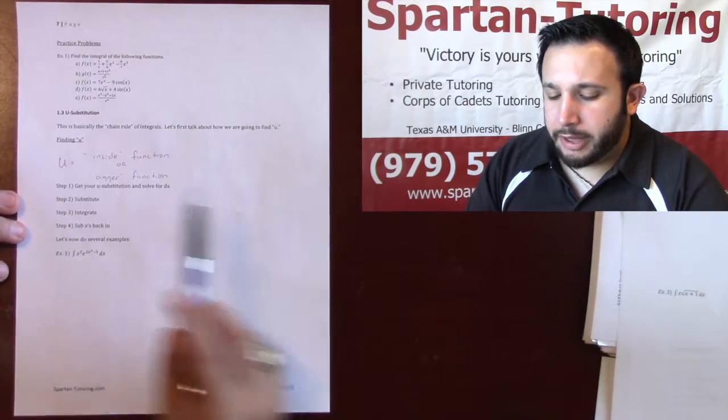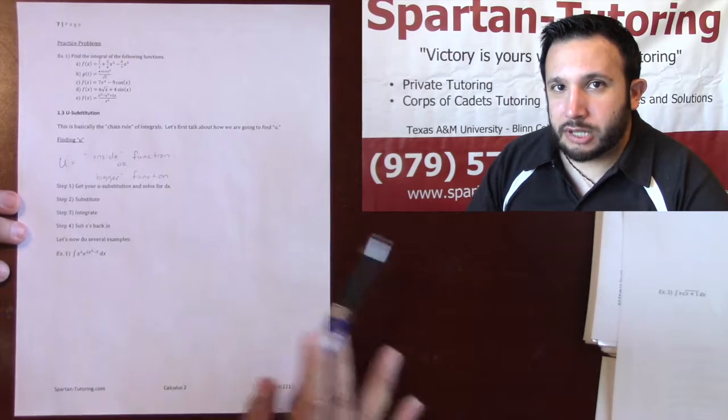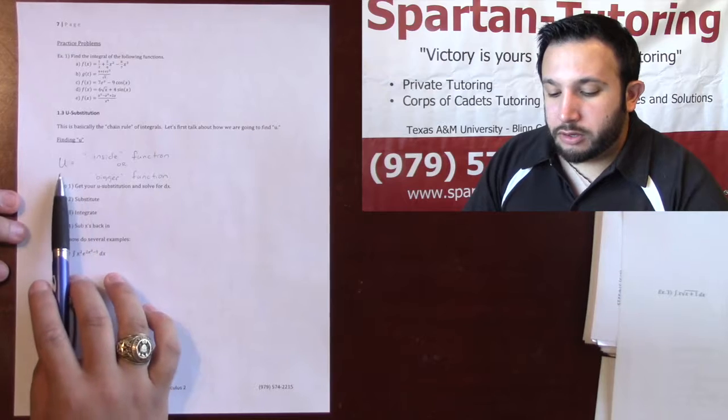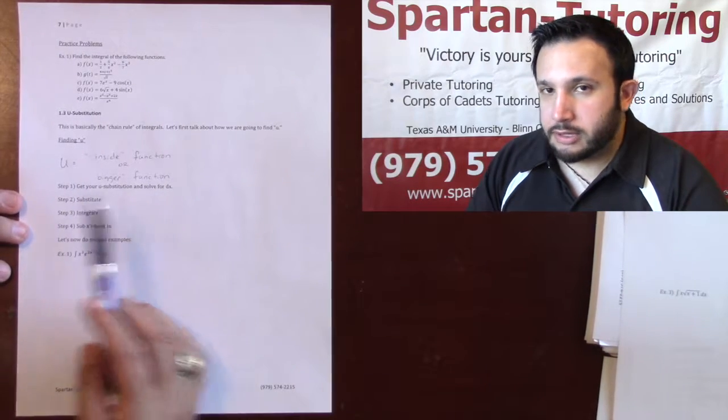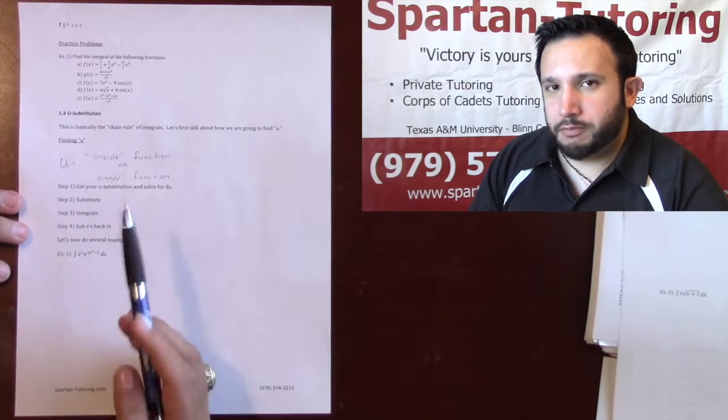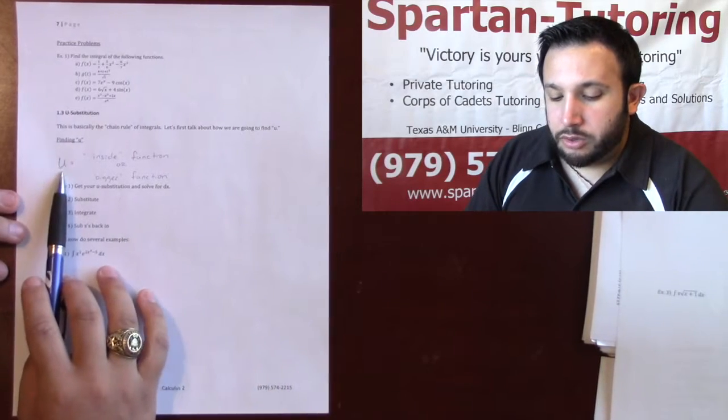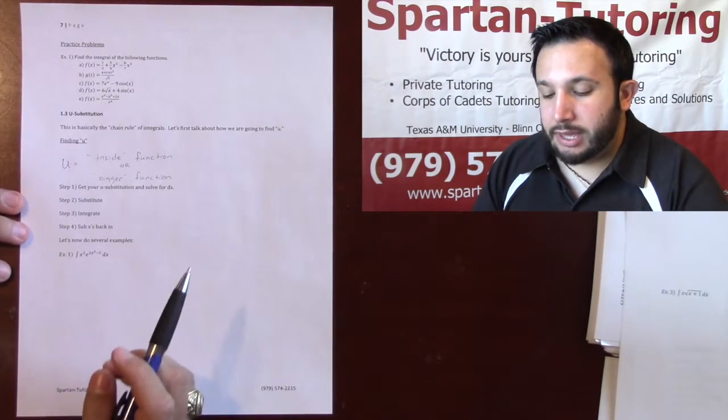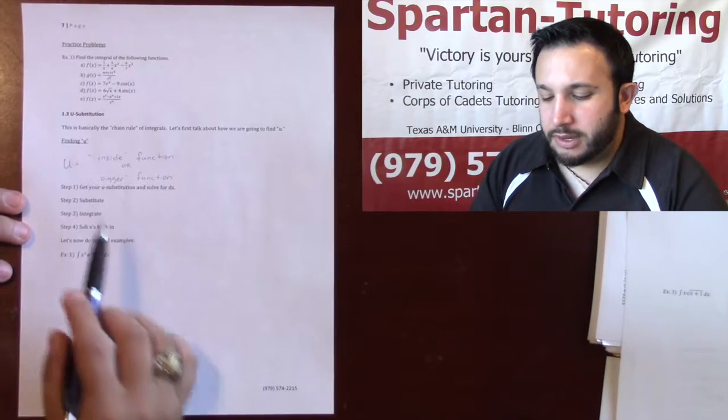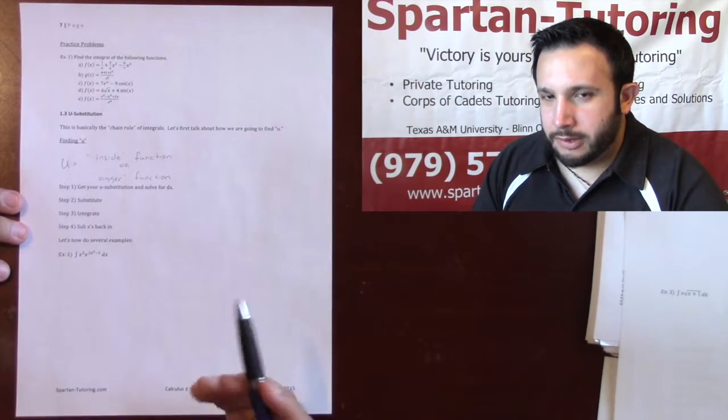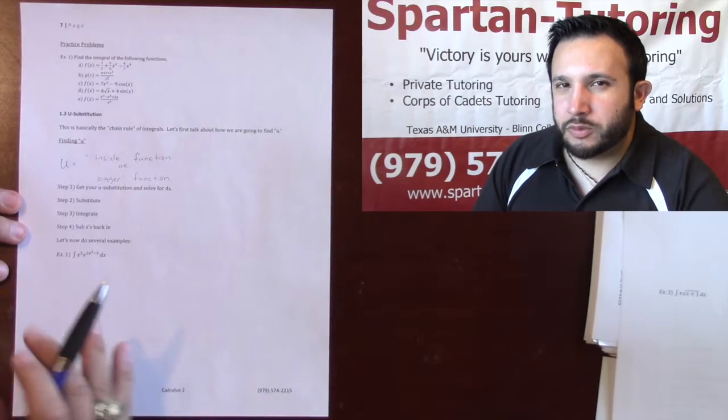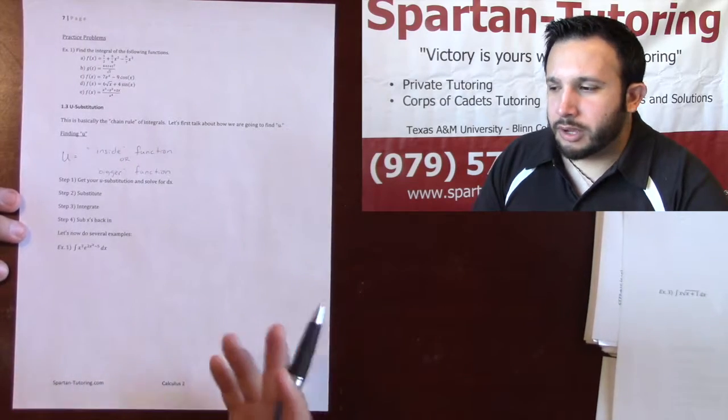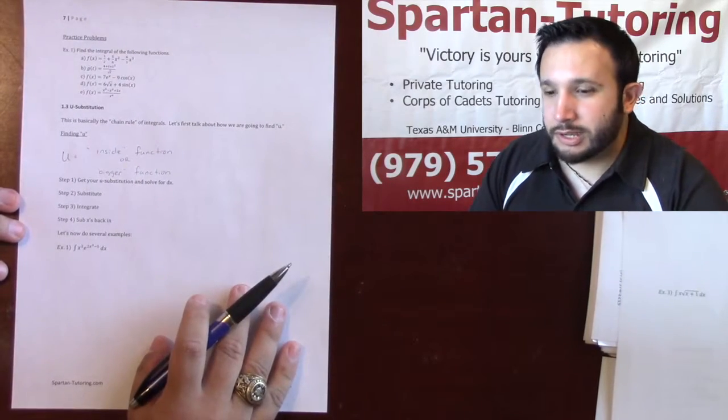Now, let's talk about how to find u. Whatever we're going to have, we're going to do four examples. I'm going to run through each example, but before we run through each example, we need to understand what to set u equal to. It's always going to be our first step. For my general rule of thumb, u is always going to be your inside function. It's a function that is inside of something else. If you don't have a function inside of something else, then look for the bigger one. That's your general rule of thumb, and that will work for 99.9% of u-subs.